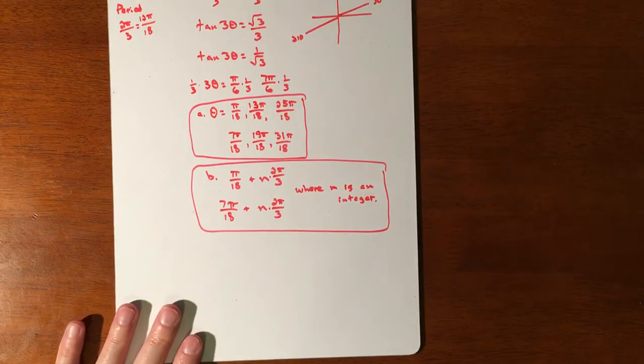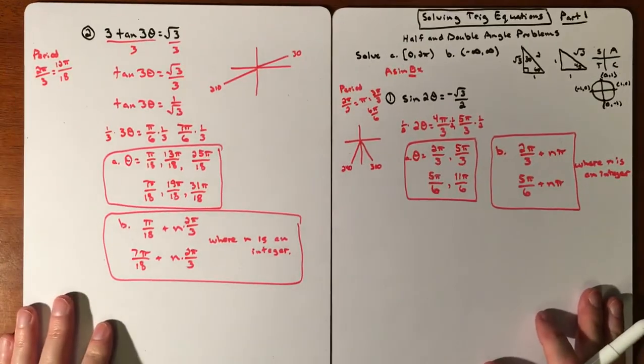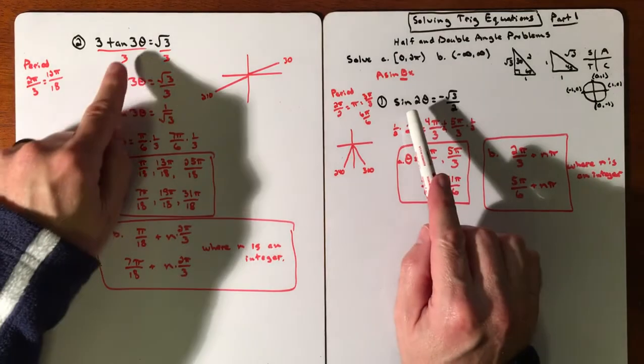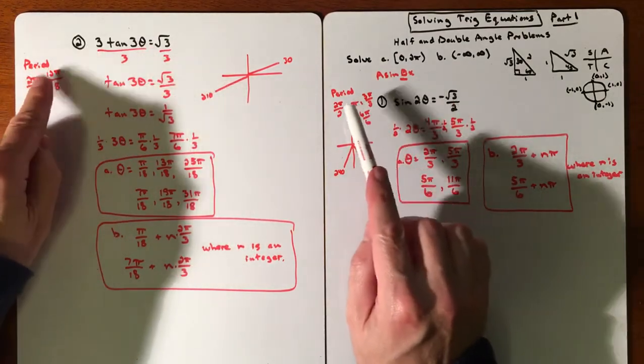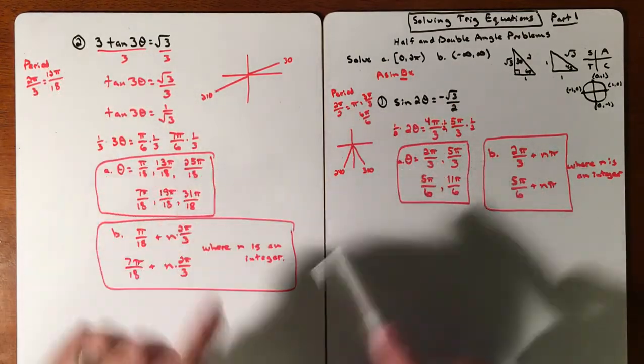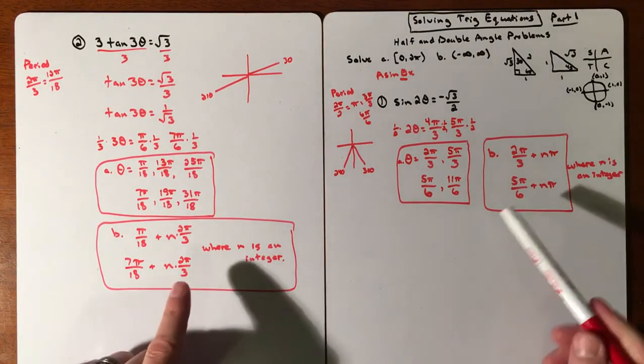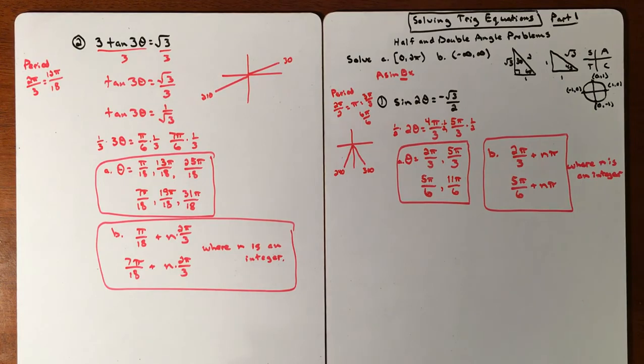So that was solving trig equations part one. And we'll do one more video associated with that. Again, they just seem to get a little rougher as we go. But again, you just had a number here. And all that did is it messed with the period, which basically just messed with the quantity of your solutions. And then it also messes with the periods. So that was part one.